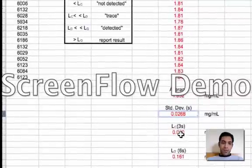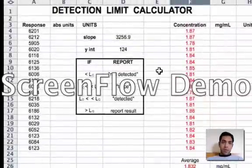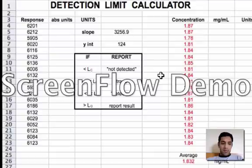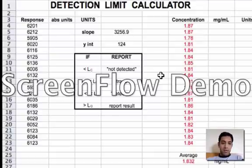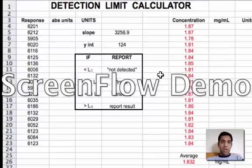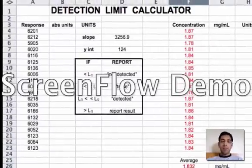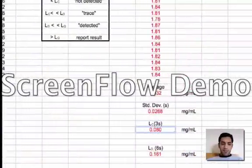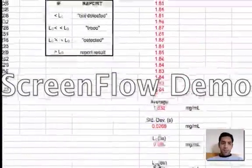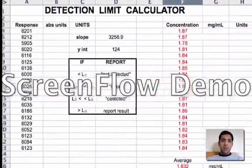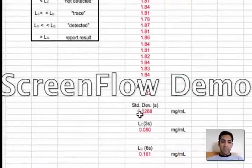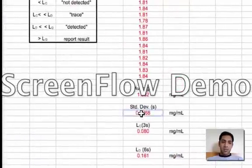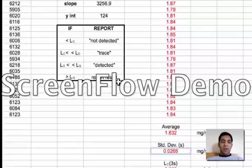When it comes to limit of detection, this is how we have calculated it: it is F29, that is the standard deviation value times 3, and limit of quantitation can be calculated as F29 times 10, that is standard deviation times 10.